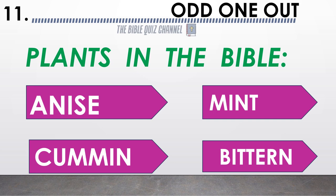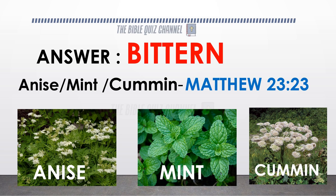Plants in the Bible — can you identify the odd one out? Anise, cumin, mint, bittern. The answer is bittern.